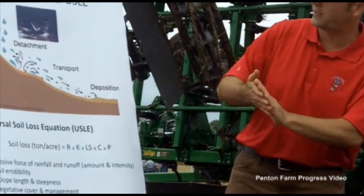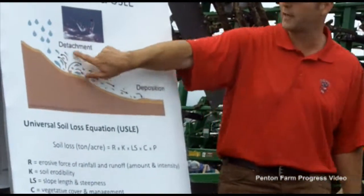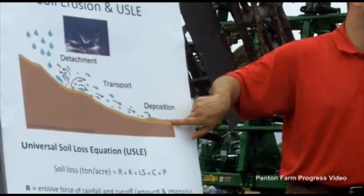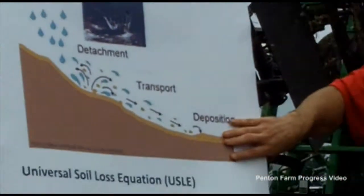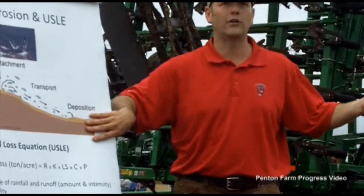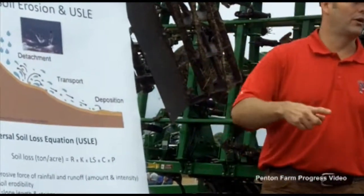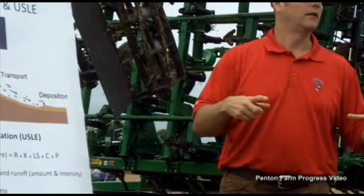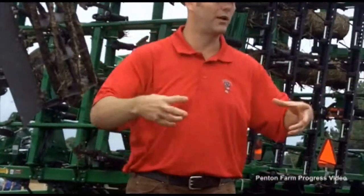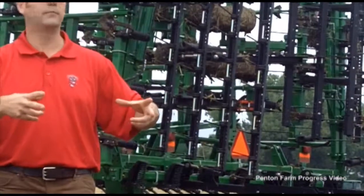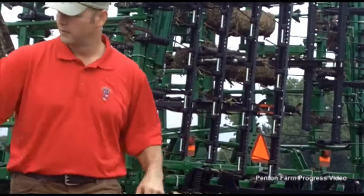The three steps of erosion are: detachment of the particles, transport, and deposition. What we're trying to do with residue is avoid detachment in the first place. Once soil particles are detached, they can be transported and deposited in another part of the field or in the ditch. Back-of-the-envelope calculations: one ton of soil at the medium range for a sufficiency index has about $9 per acre of fertilizer value — that adds up quickly. Five tons per acre is a typical high-end T-level soil loss. If you get a one-foot tile, 12 by 12, you'd need to put about two tablespoons of soil and spread it over that area. That's what five tons per acre looks like — not a lot, is it?